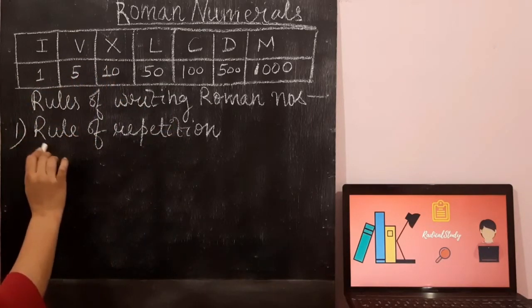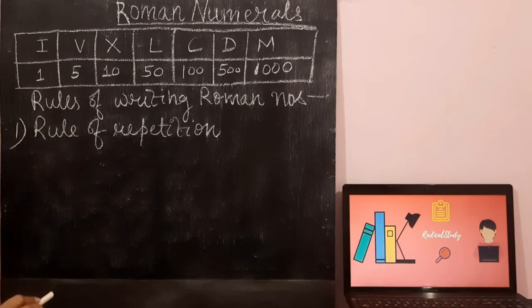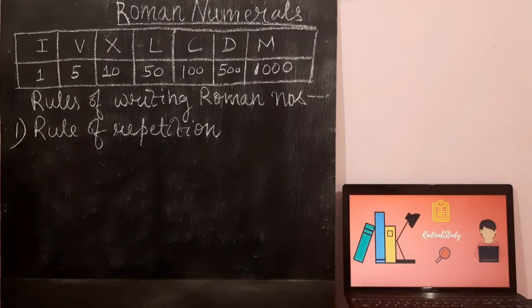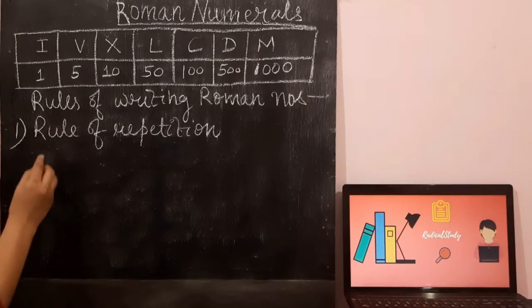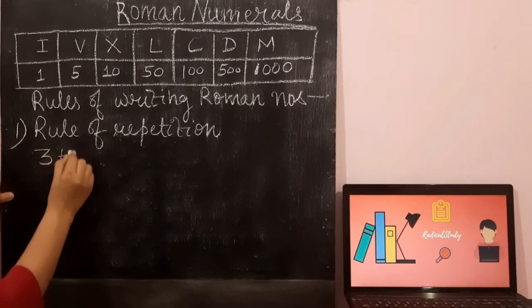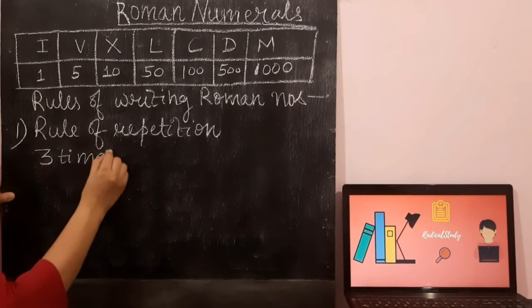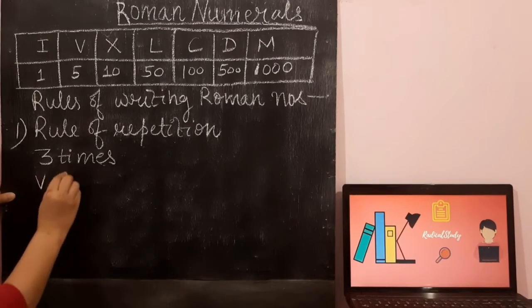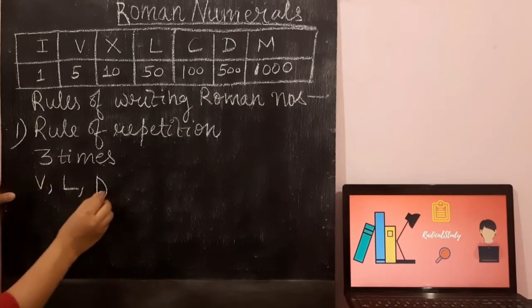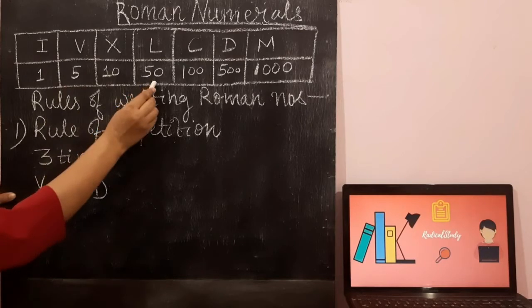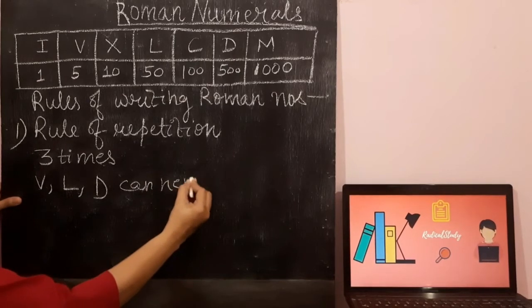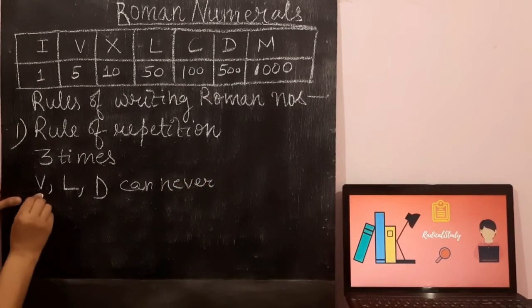The first rule which we follow while writing any Roman numeral is the rule of repetition. The rule of repetition says that any Roman numeral can be repeated 3 times but not more than 3 times. But there are exceptions: V, L, and D — that is 5, 50, and 500 — can never be repeated.